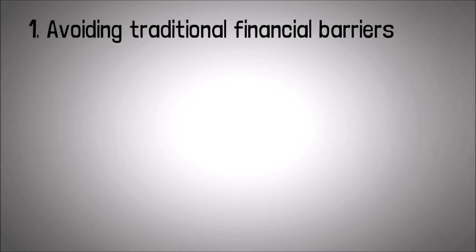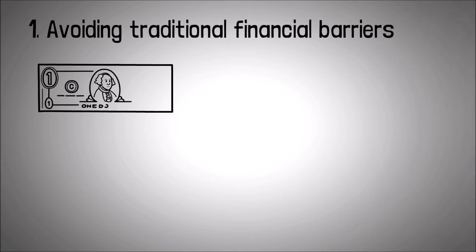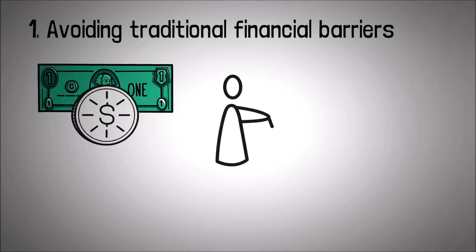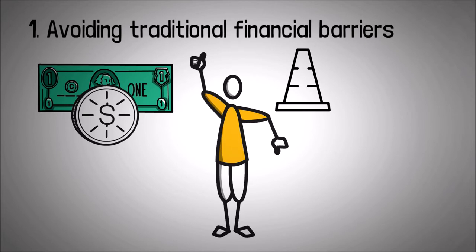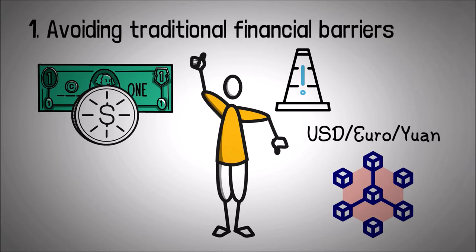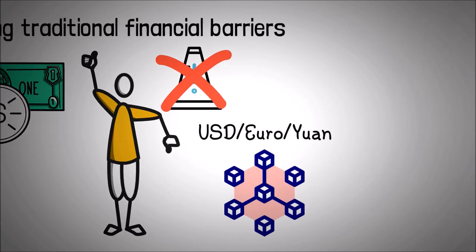1. Avoiding traditional financial barriers. By the use of fiat-pegged stablecoins, users can go around the traditional financial barriers set in different countries. You can own an equivalent of USD or EURT or Chinese yuan on the blockchain without facing any restrictions imposed by any government or central bank or any other centralized entity.